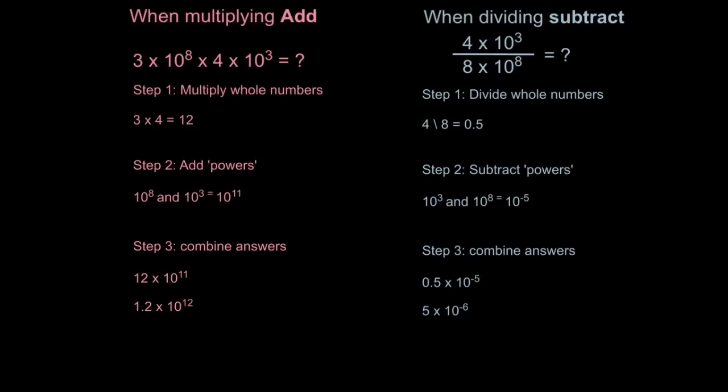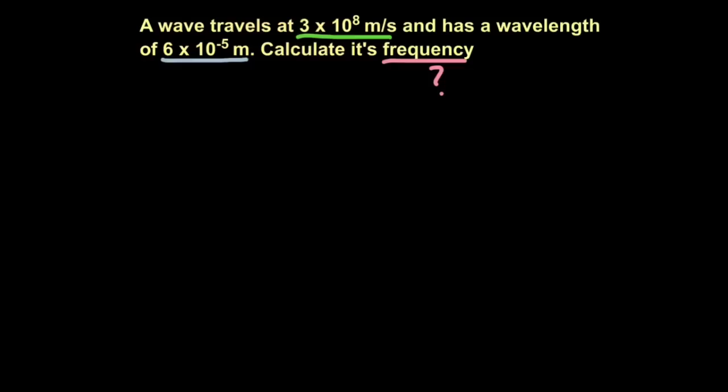So when we move it forward 1, we're basically taking away a power. Now because it's negative, if we take away a power, it becomes more negative, so minus 6. So remember, when we move the decimal place back, we add 1 power. And if we're moving the decimal place forward, we subtract 1 power.